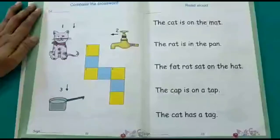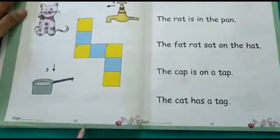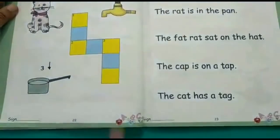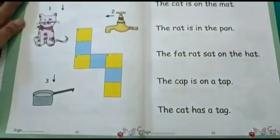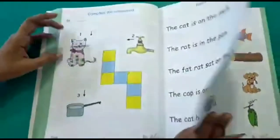Good morning children. Now let's start with our English language machines. So children, now our activity for today is on page number 22, 23, and 24 of the language book.